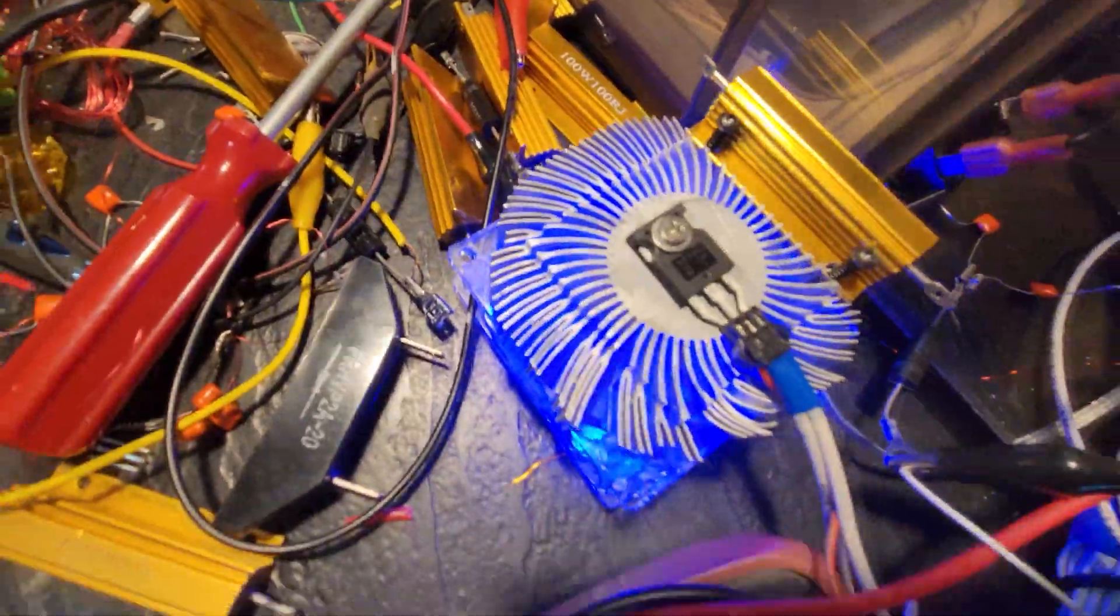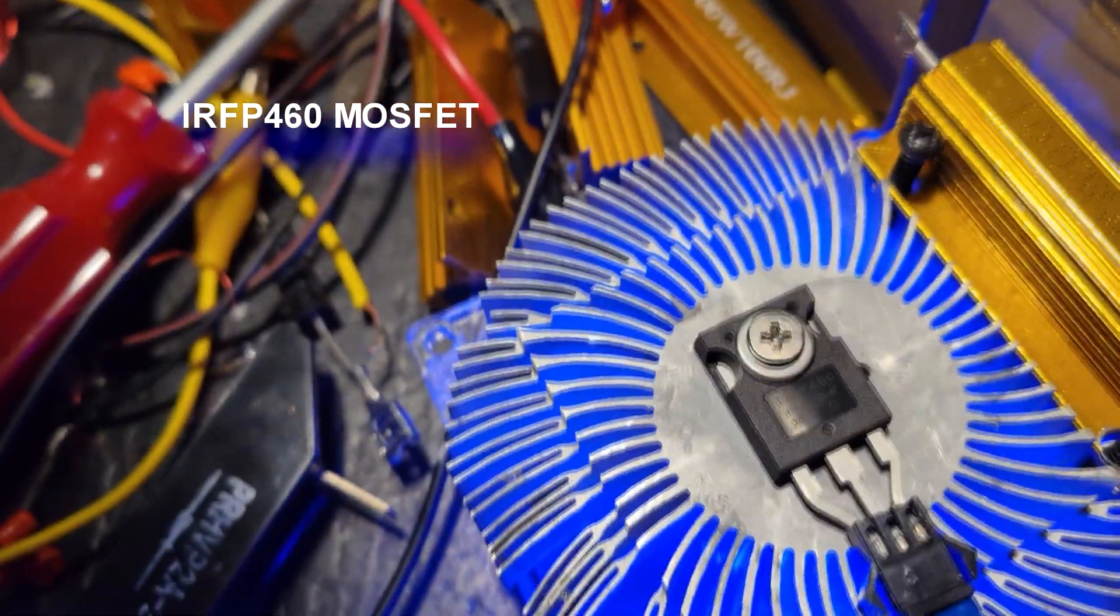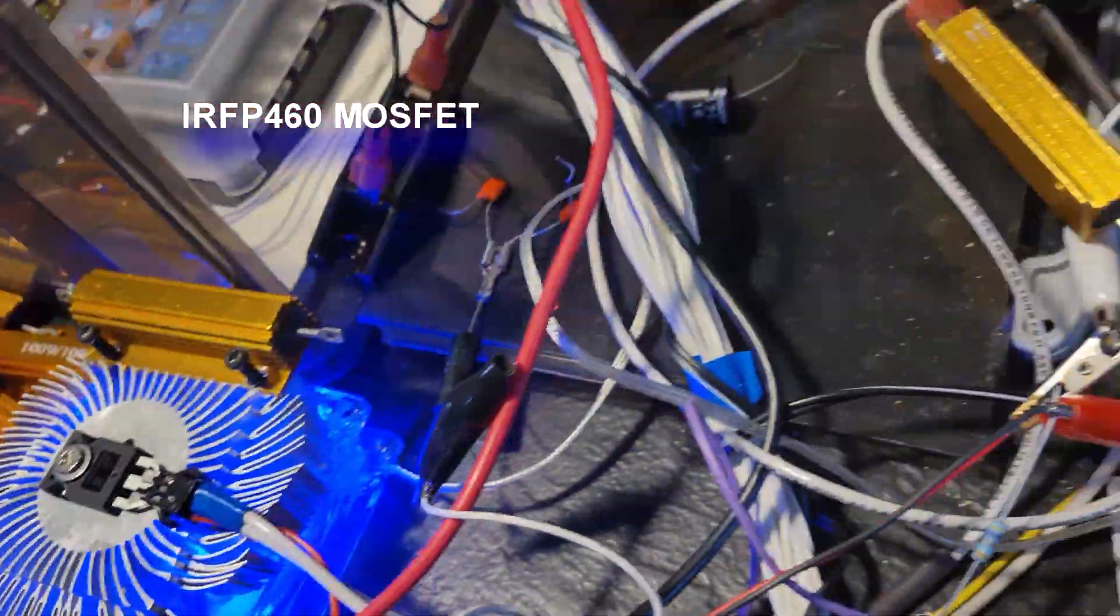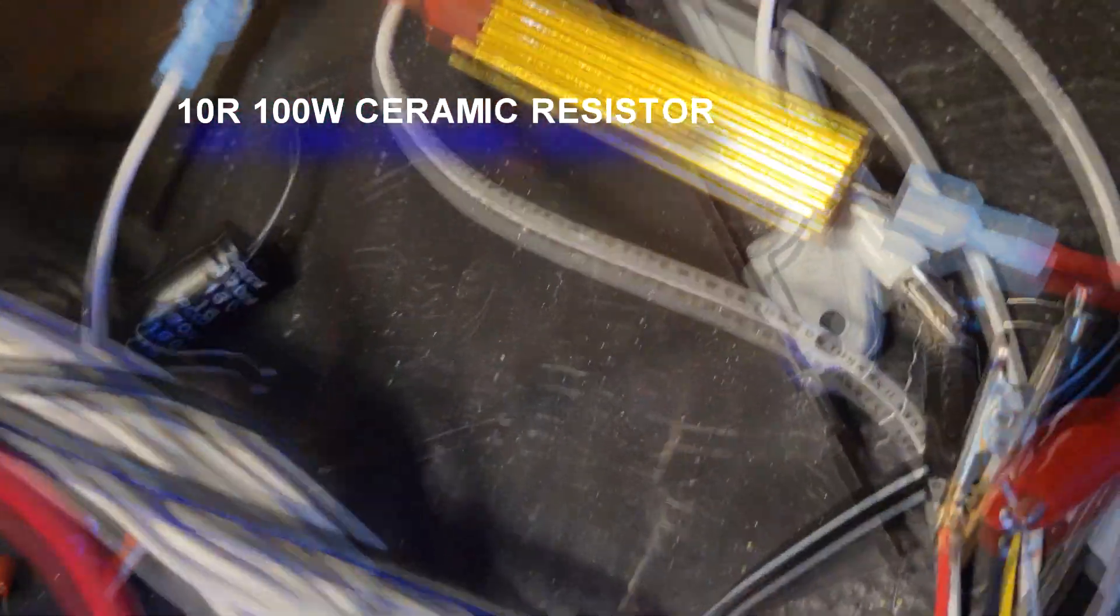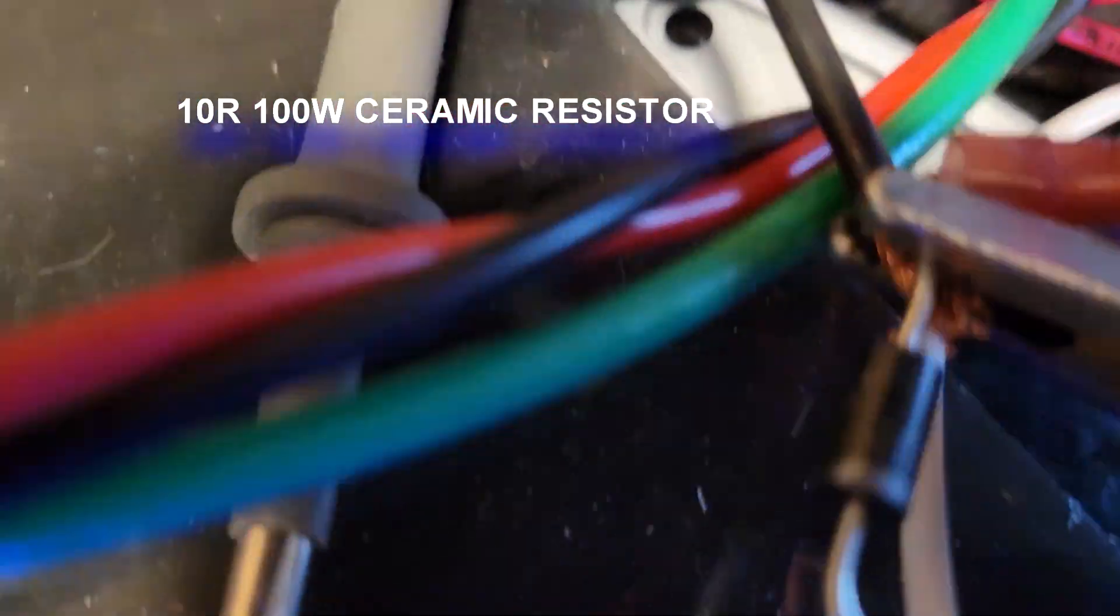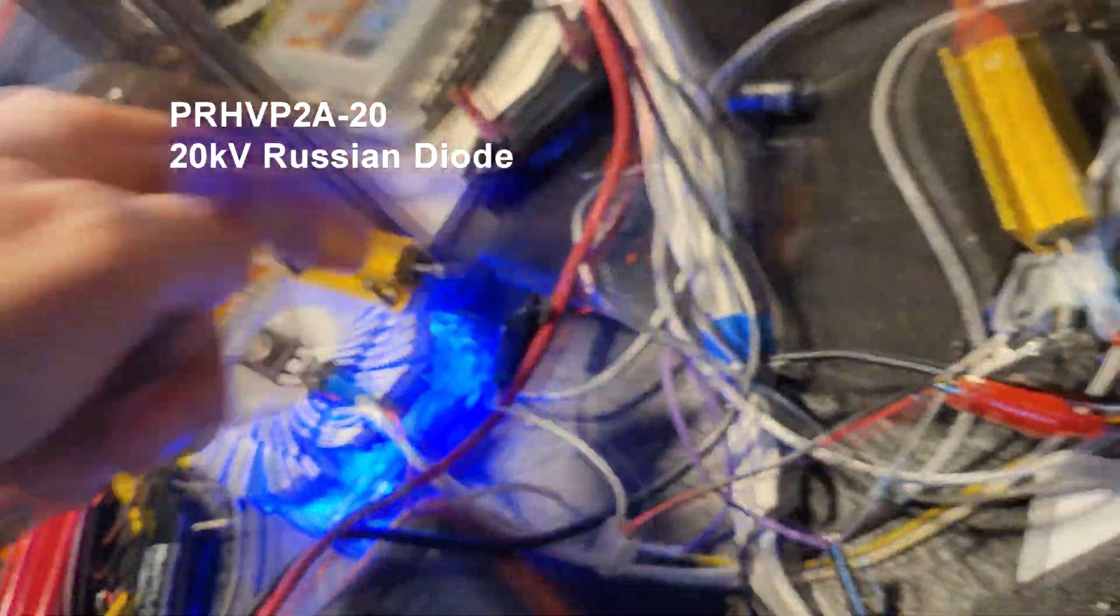For reference here, that's an IRFP 460 MOSFET. This is a 10 ohm, 100 watt resistor. It's a standard diode of sorts. Then my high voltage diode coming from the secondary. The current respective.